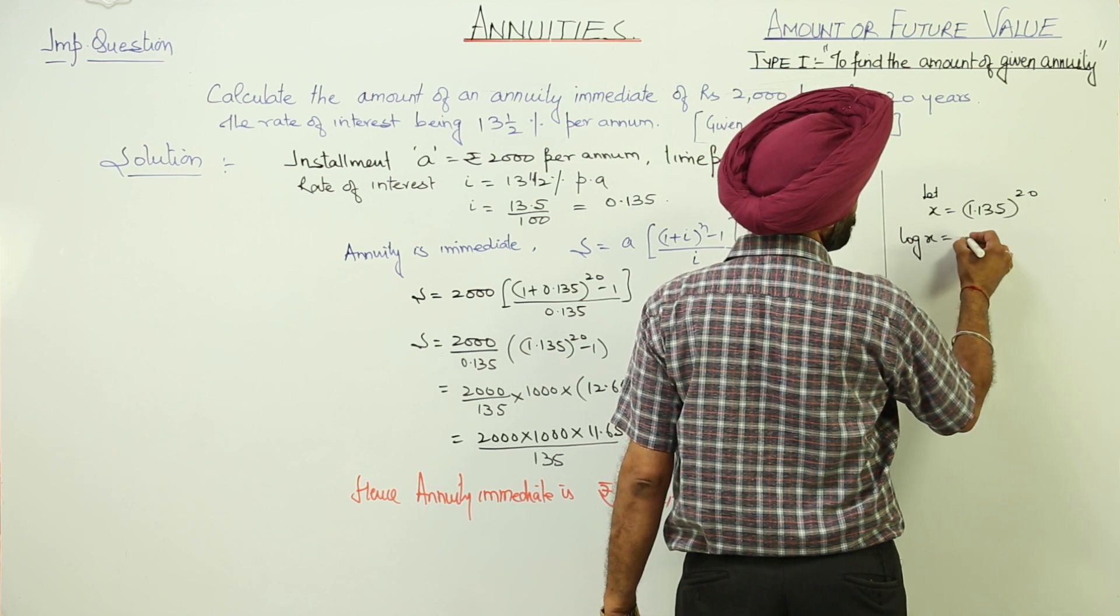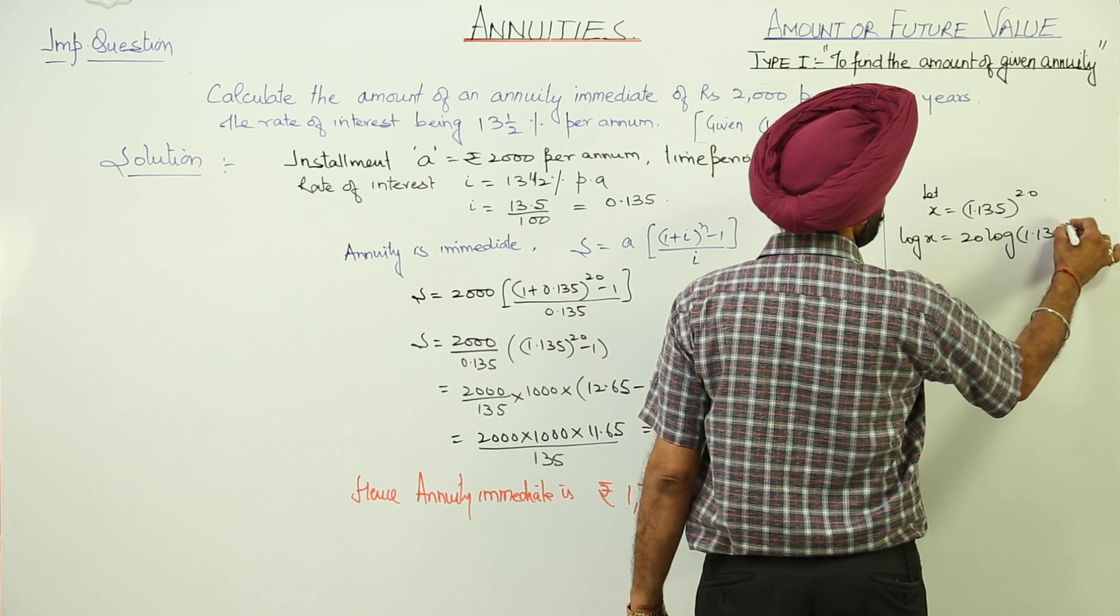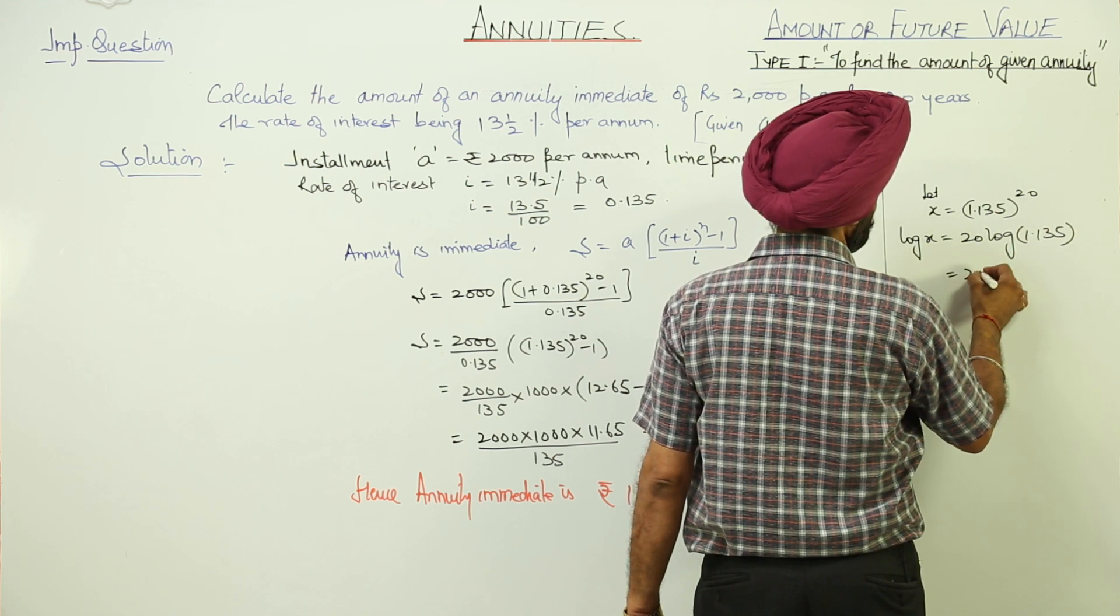Taking log on both sides, log x is equal to 20 times log 1.135.